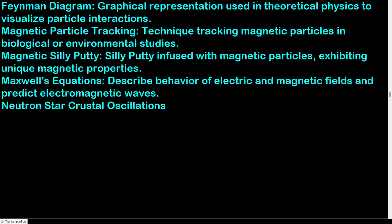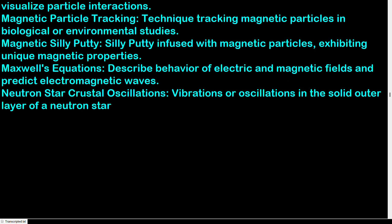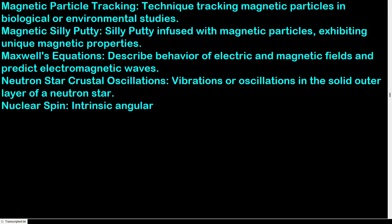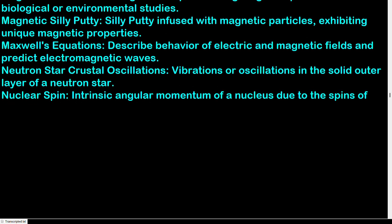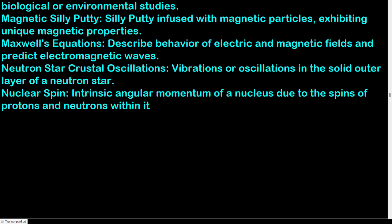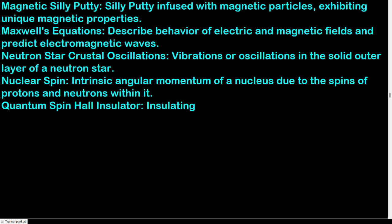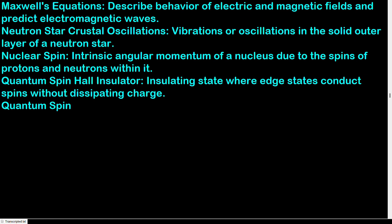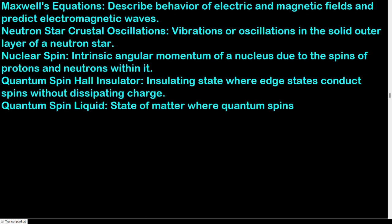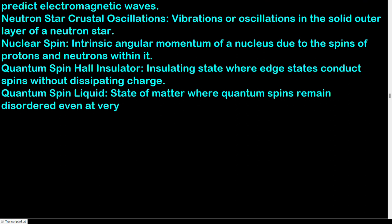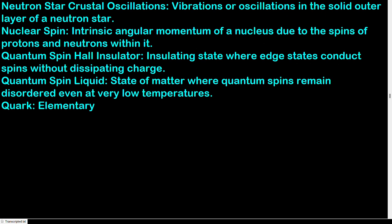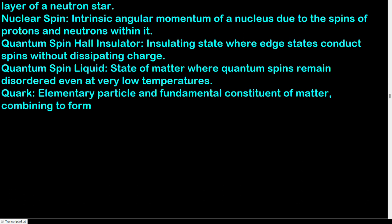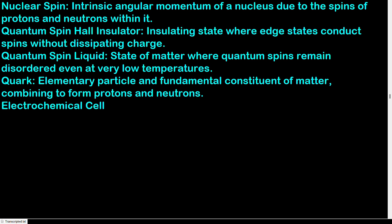Neutron star crustal oscillations: vibrations or oscillations in the solid outer layer of a neutron star. Nuclear spin: intrinsic angular momentum of a nucleus due to the spins of protons and neutrons within it. Quantum spin Hall insulator: insulating state where edge states conduct spins without dissipating charge. Quantum spin liquid: state of matter where quantum spins remain disordered even at very low temperatures. Quark: elementary particle and fundamental constituent of matter, combining to form protons and neutrons.